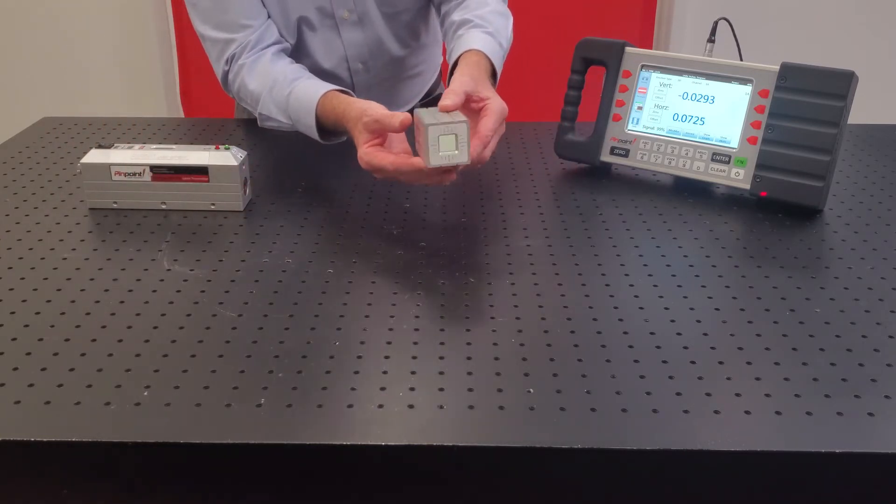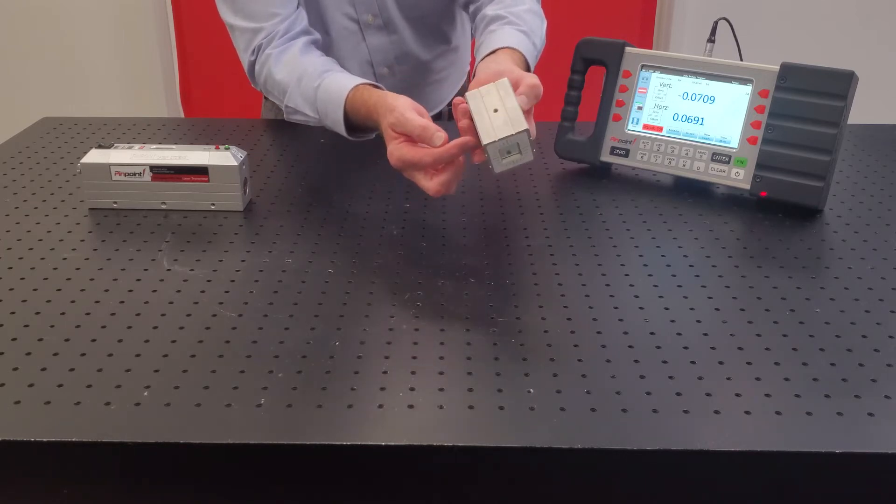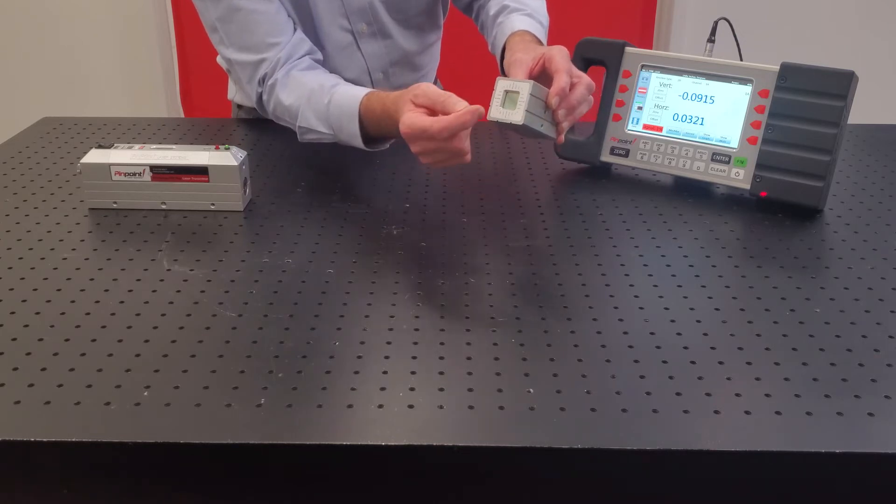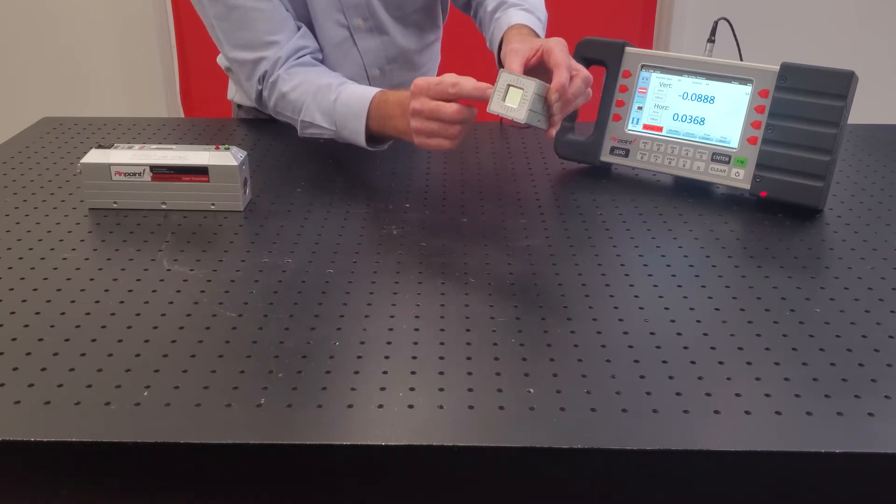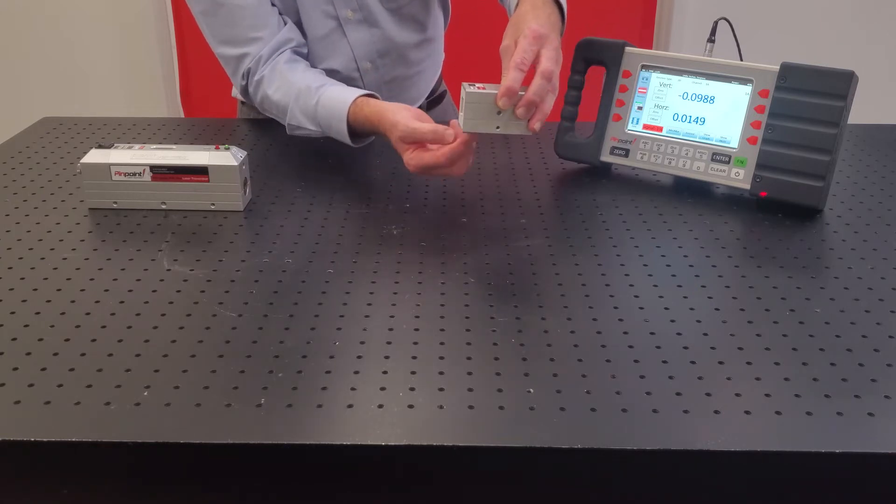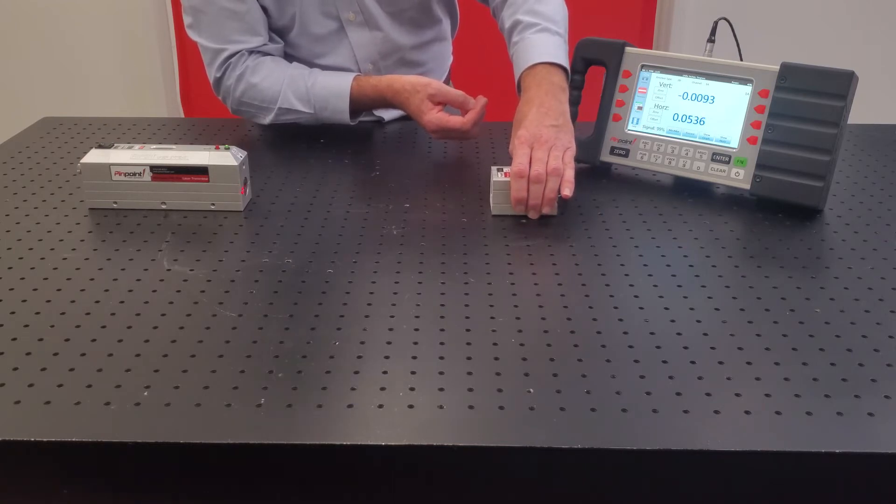The receiver, also machined from a solid block of material, has mounting points on it, and you'll see here a square window in the end. As the laser beam enters this window, it lands onto a digital receiver, and that registers the position of the laser beam left, right, up, and down relative to the sides of the housing.